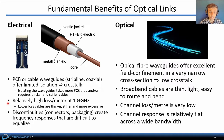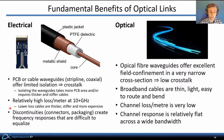Electrical links also present relatively high loss per unit distance at frequencies of 10 gigahertz and above due to skin effect and dielectric losses. To reduce that loss, cables must be thicker, stiffer, and use more expensive materials. Finally, discontinuities in electrical links due to connectors or packaging parasitics create frequency responses that are difficult to equalize.